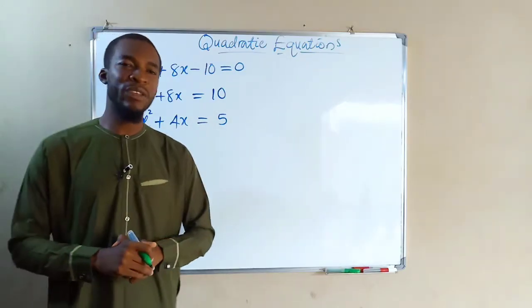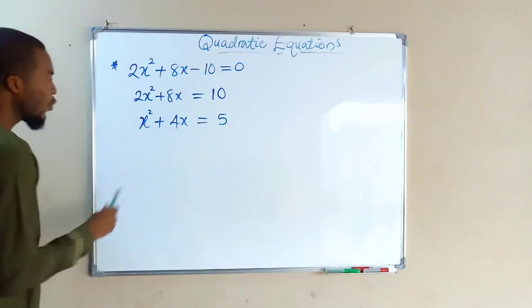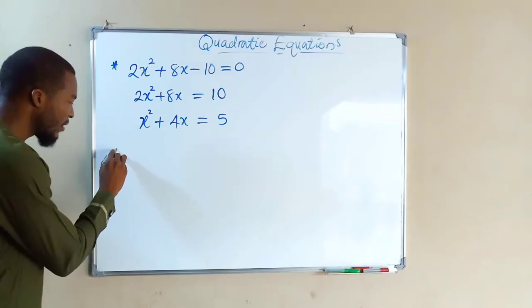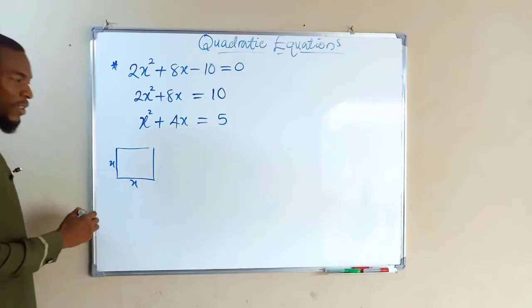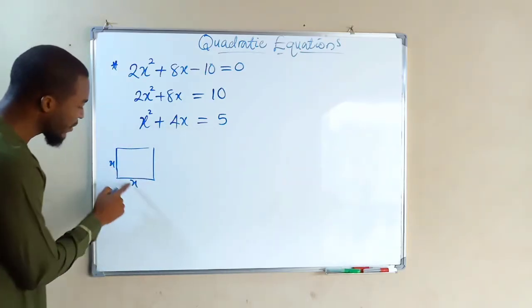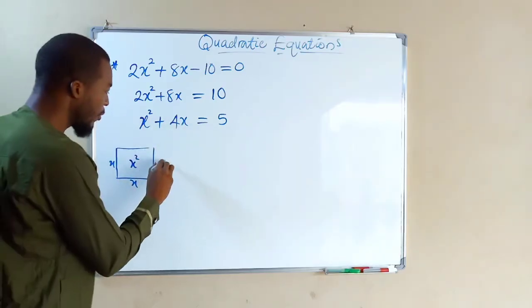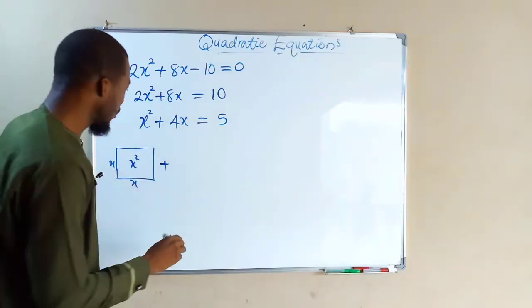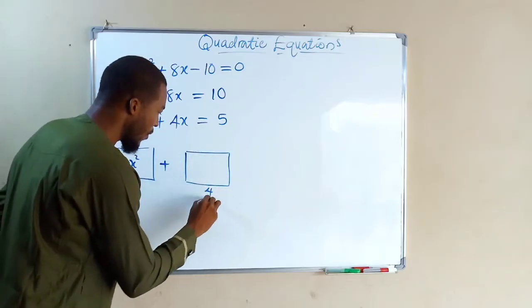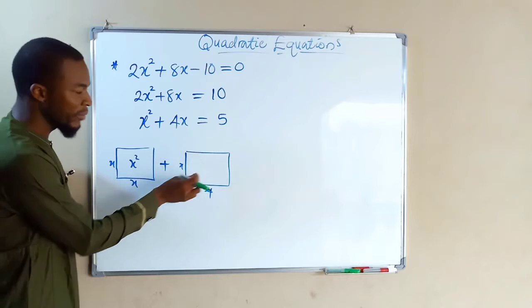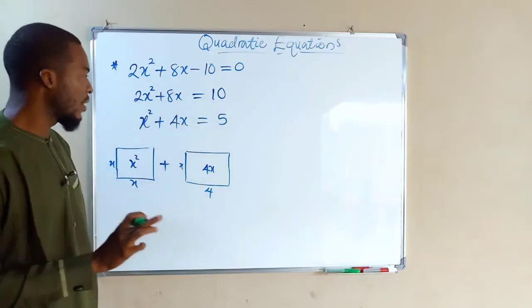Now we are ready to complete the square. We want to represent each of these terms by a plane figure. The first term, x², is represented by a square of dimension x by x, so the area is x times x, which is x². The term 4x is represented by a rectangle of dimensions 4 and x, so the area is x times 4, which is 4x.